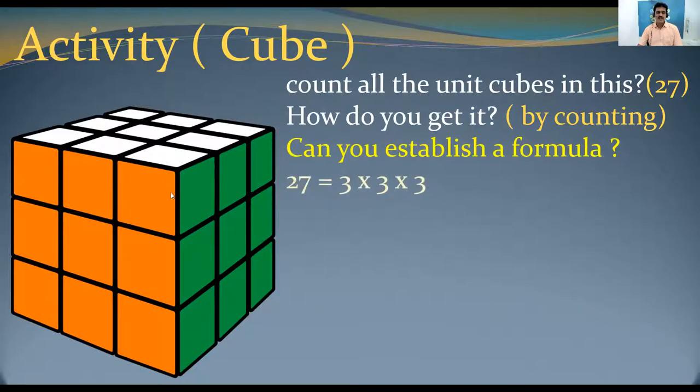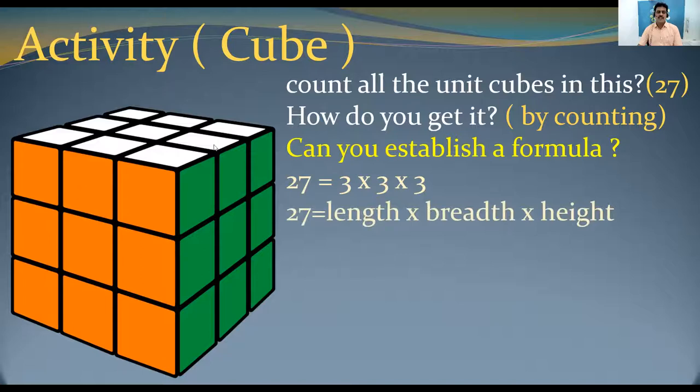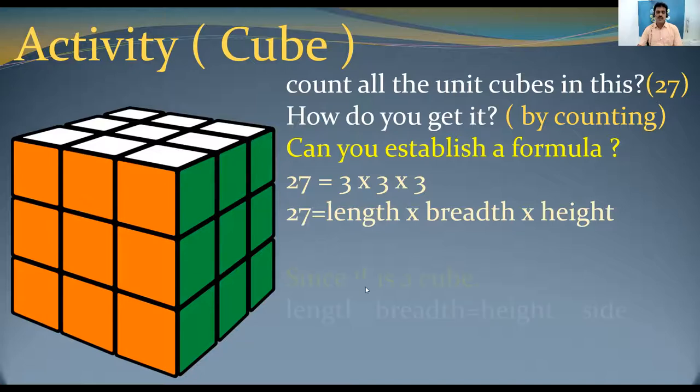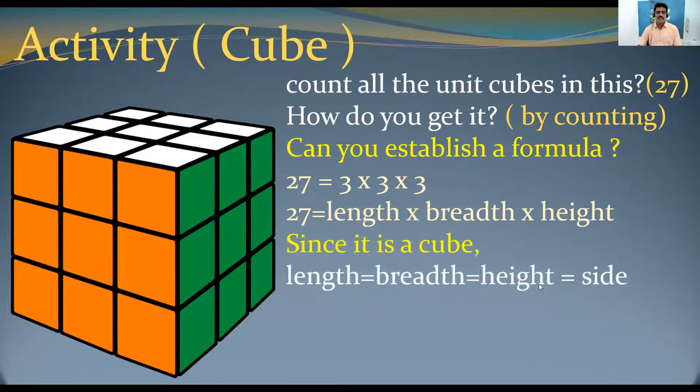Yes. 27 is equal to 3, 3, 3. Length is 3, breadth is 3, height is 3. 3 into 3 into 3. This is length, breadth and height. So, 27 is equal to length into breadth into height. But since it is a cube, length if it is 5 cm, breadth also 5 cm, height also 5 cm. So, length, breadth, height are same. We can call this one as edge of a cube, isn't it? Or side of a cube. So, since it is a cube, length is equal to breadth is equal to height is equal to side. Side of a cube.